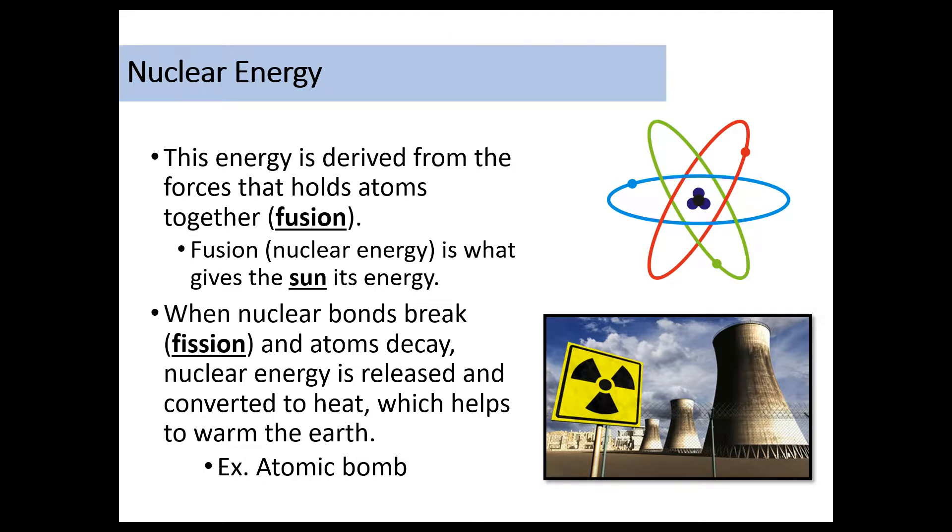Nuclear energy. This is another one that we're going to talk about more in depth when we get to chemistry. But for now, you need to know that nuclear energy is derived from forces that hold atoms together. We call this fusion. And this is where the sun gets its energy from. But I'll remind you of that again when we get to our nuclear energy unit. When these nuclear bonds break, this is called fission. Fission is division. Nuclear energy can be released in abundance, which is actually how we get our electricity. This is also with the atomic bomb. So fusion and fission are just examples of nuclear energy. And this has to do with what goes on in the nucleus of an atom, which is why we talk about this when we get to chemistry. Because when we get to chemistry, we'll talk all things atoms.